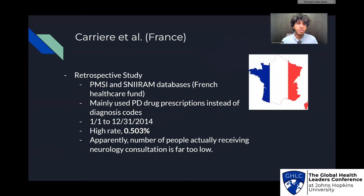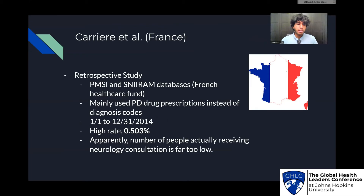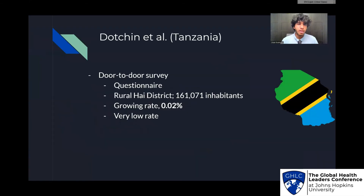Carrera et al. in France was also retrospective. They used PMSI and SNIRAM databases from the French Healthcare Fund. However, instead of using diagnosis codes, they used drug prescriptions as an indicator, which may have resulted in an abnormally high rate, because these drugs may be issued to non-Parkinson's patients with similar conditions as well. The authors also noted that the number of people actually receiving neurology consultation was far too low.